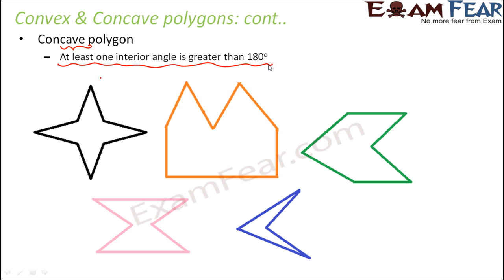Whenever one of these angles becomes greater than 180 degrees, it forms a cave-like structure. Look at the first image — this interior angle here is more than 180 degrees, because 180 degrees would have been only up to here. Since it is more than 180 degrees, it forms this cave-like structure. Similarly, this angle and this angle are also more than 180 degrees, while these other angles are lesser than 180. In this next diagram, this angle is more than 180 degrees, but all other angles are less than 180.